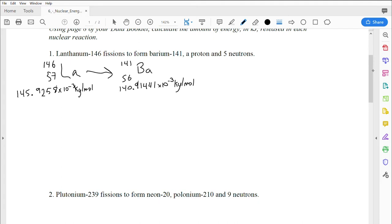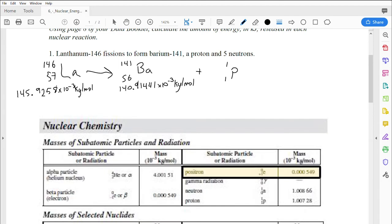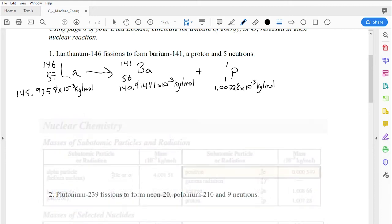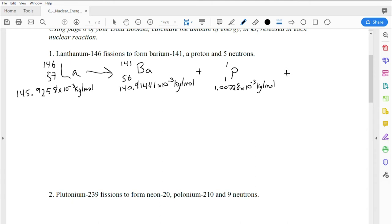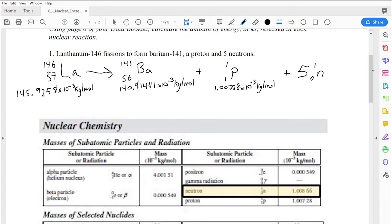We're also going to get a proton. The proton is on your chart in a funny spot, up at the top table, right at the top of the page on the right-hand side. It also has a mass not very big compared to some of these other isotopes we're dealing with, same units though: 10 to the negative 3 kilograms per mole. And then we're going to get five neutrons.